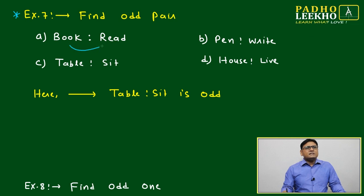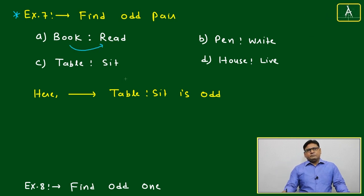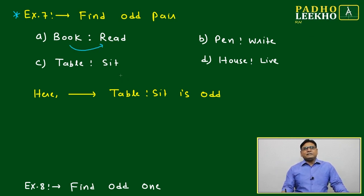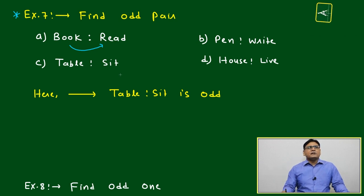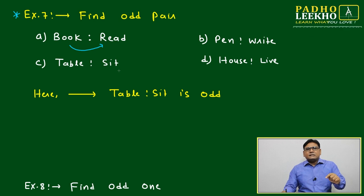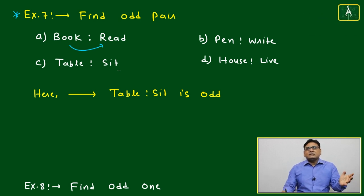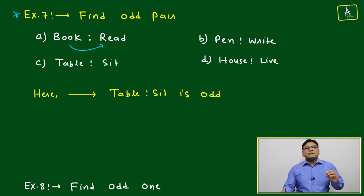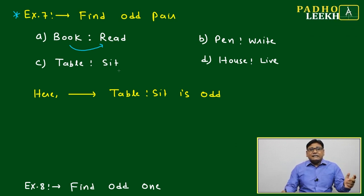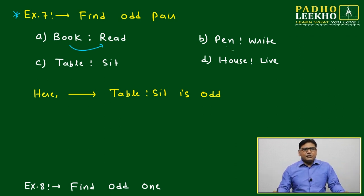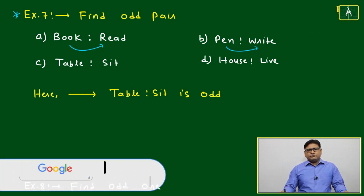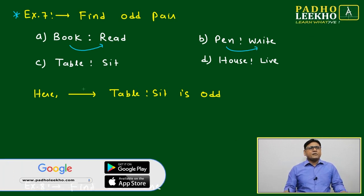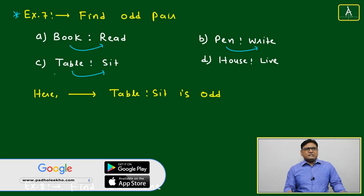Book should always be read. Book and reading activity - reading is an action word and book is a noun. Book is read by a certain person who does the action. Similarly, pen - what is the action? Write. Through pen you can write. Table - you have to sit.